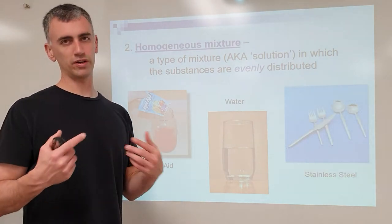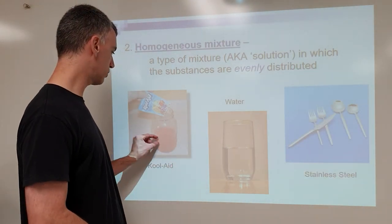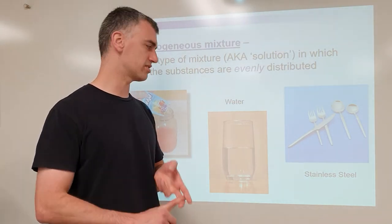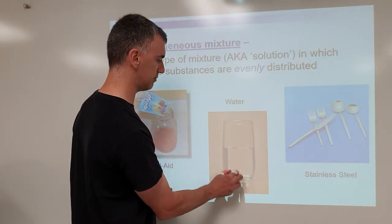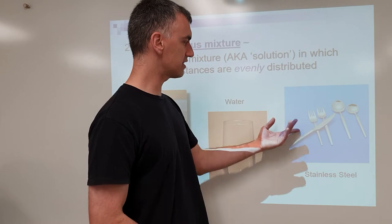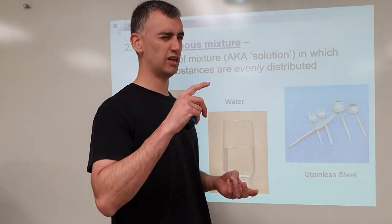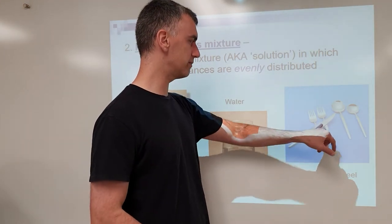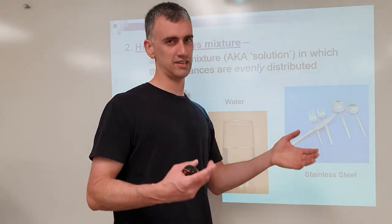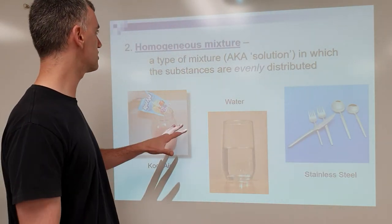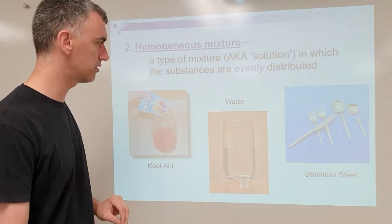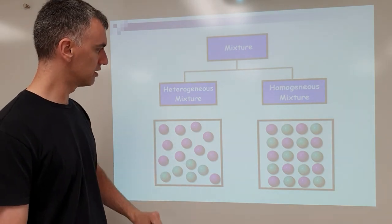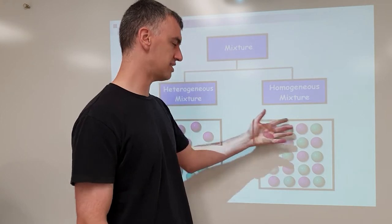A homogenous mixture means evenly mixed — no matter where you look, you see the exact same thing. Kool-Aid, for example: no matter where you look, you see a mixture of water and Kool-Aid mix. Water contains dissolved minerals and dissolved gases, and no matter where you look you see the same thing. Stainless steel is a mixture of iron, carbon, and depending on the type, maybe chrome or manganese — and it's very evenly mixed, so no matter where you look, you see roughly the same mixture of atoms. Homo means the same, because no matter where you look, you see the same thing.